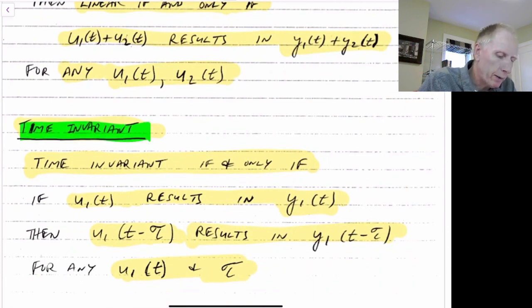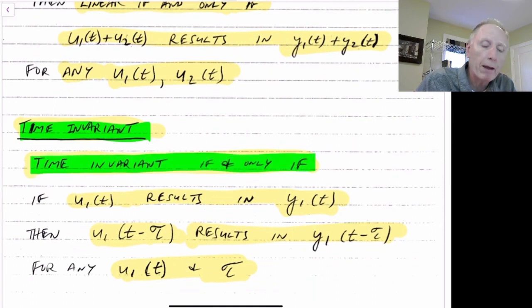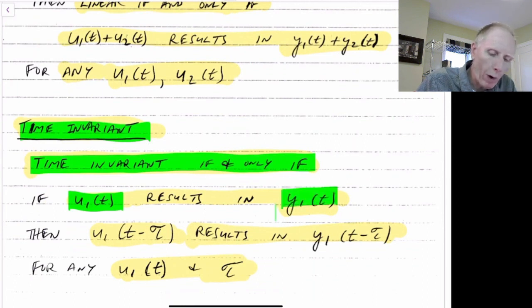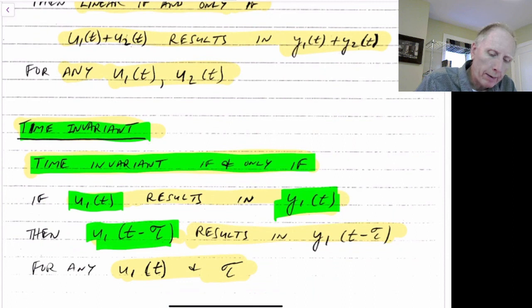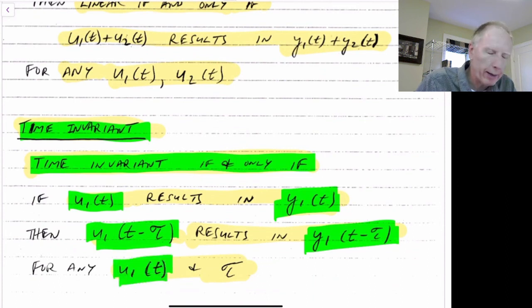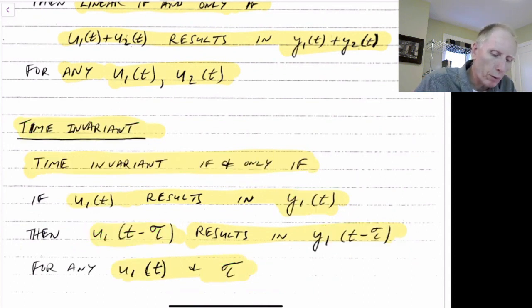What will it be in a time-invariant system? A system is time-invariant if and only if u1 of t results in an output y1 of t. If we delay that input, so we put an input of u1 of t minus tau, that would result in an output of y1 of t minus tau — delayed the exact same amount. And that should be true for any u of t and any tau. So if we meet both of those criteria, then our system is linear time-invariant.